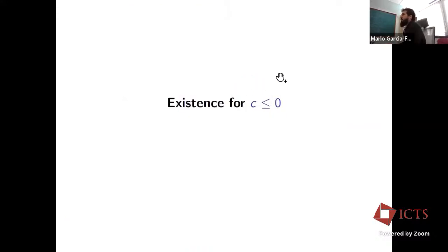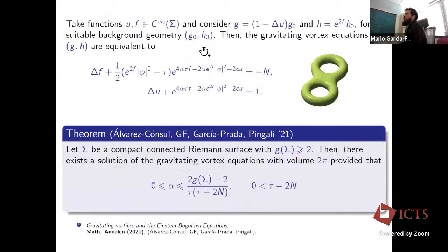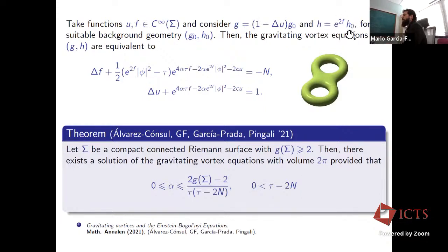Now let me move to the mathematical results. For c non-positive, the equations can be reduced to a system of PDEs for two functions u and f on the Riemann surface. Taking a background metric g₀ and background Hermitian metric h₀, the gravitating vortex equations for (g, h) are equivalent to this system of PDEs involving Laplacian terms and highly nonlinear zero-order terms.